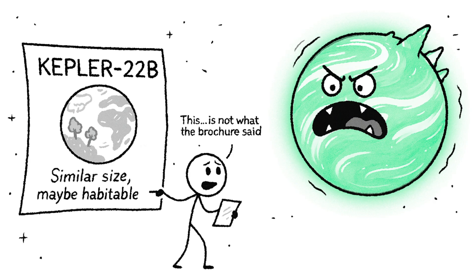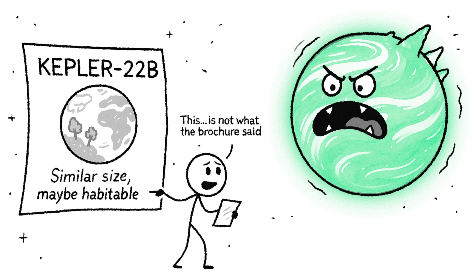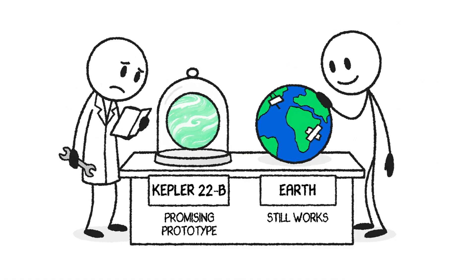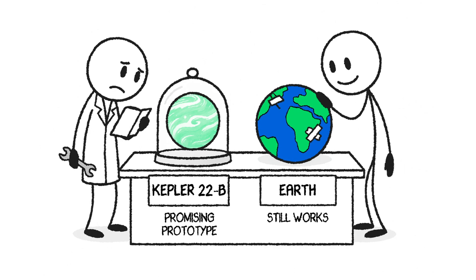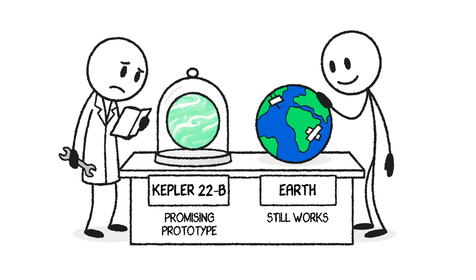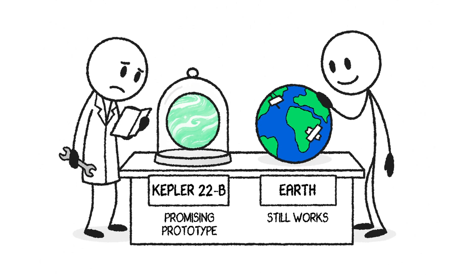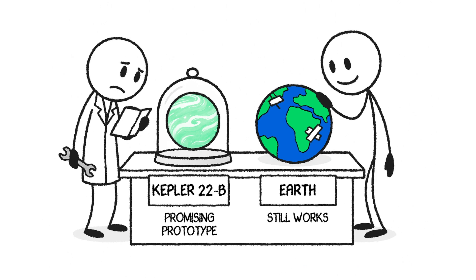So, is it worth the switch? On paper, Kepler-22b looks like Earth's big brother. But in practice, it's an entirely different beast. Kepler-22b is a fascinating possibility, a potential second chance. But Earth, with all its imperfections, is still the only planet we know that works for us. At least here, you don't need a pressure suit just to breathe or worry that the ocean might melt your face off. Maybe Earth isn't so bad after all.